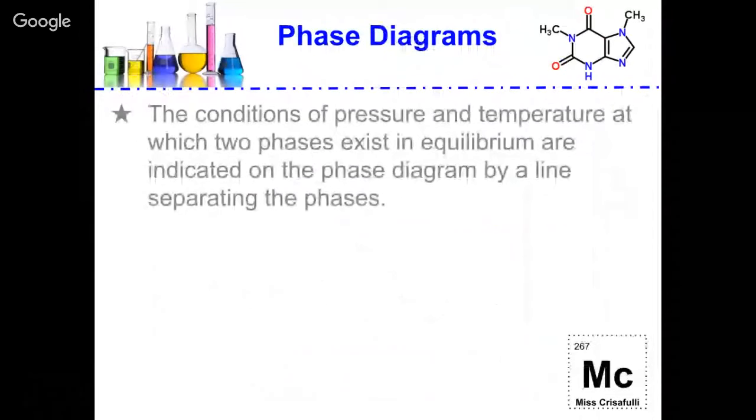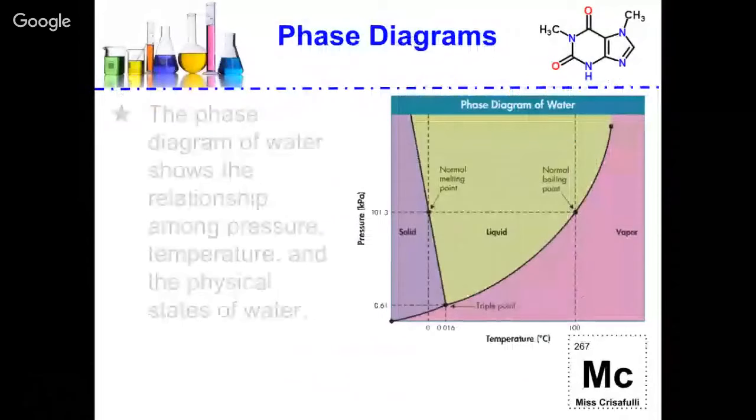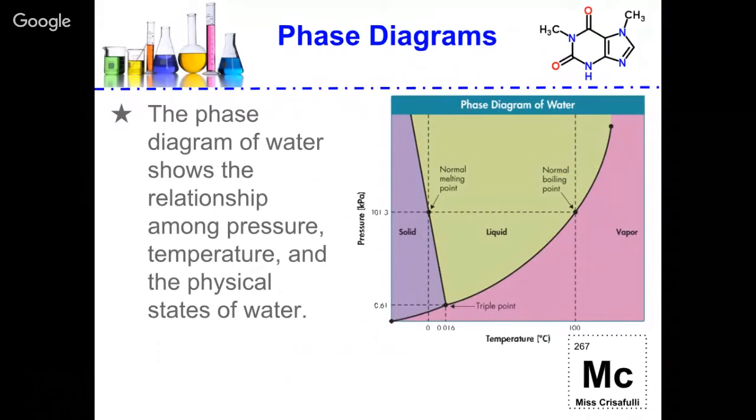The conditions of pressure and temperature at which two phases exhibit an equilibrium are indicated on the phase diagram by a line separating the phases. If we look at the phase diagram of water to the right, we can see the relationship among pressure, temperature, and the physical states of water. We can see at low temperatures and low pressures that we have a solid. At middle temperatures and middle pressures, we have a liquid. And at high temperatures, low pressures, we have vapors.